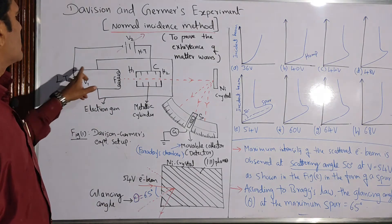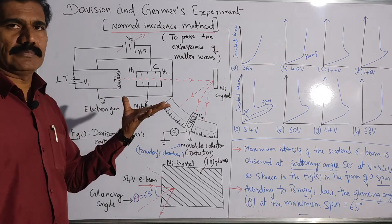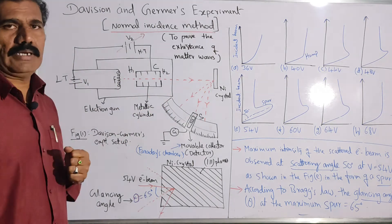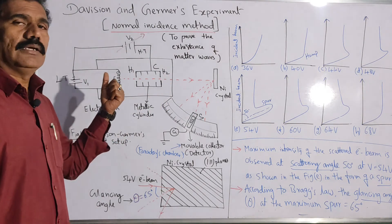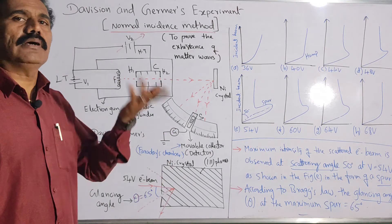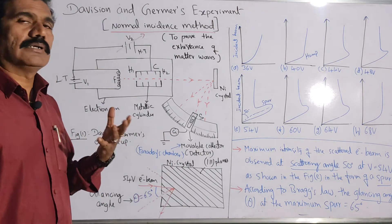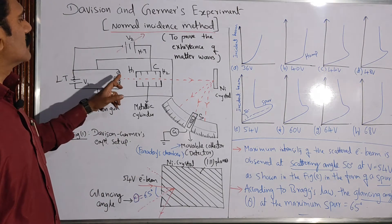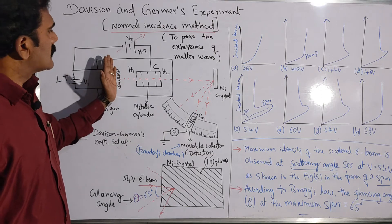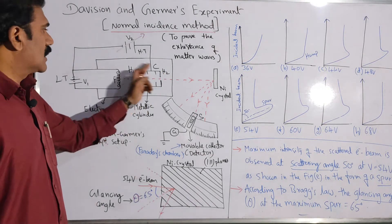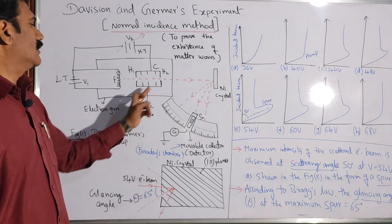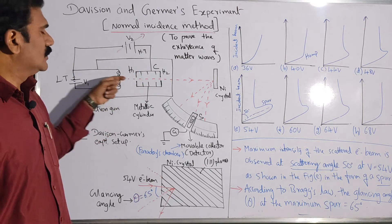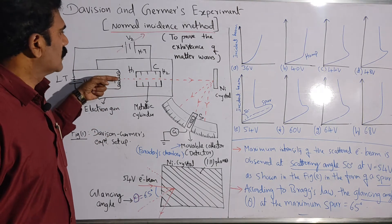Whenever there is a passage of current through the filament, the filament gets heated. When the filament becomes red hot, the electron gets emitted by the filament. Any hot metallic surface always emits electrons — that is called thermal electrons. Thermally emitted electrons are called thermal electrons. Such thermally emitted electrons are allowed to accelerate towards another chamber, which is actually called a metallic cylinder, in which we have two pin holes H1 and H2. Through those pin holes, electrons are made to accelerate.